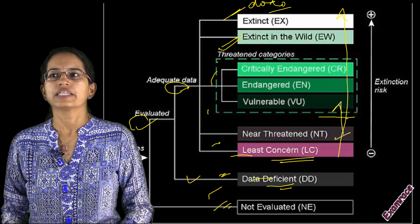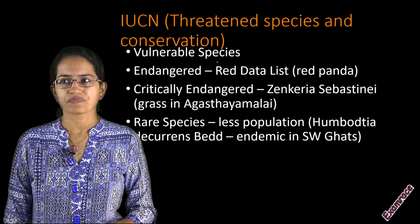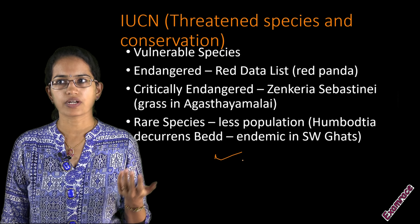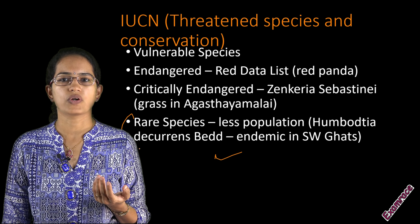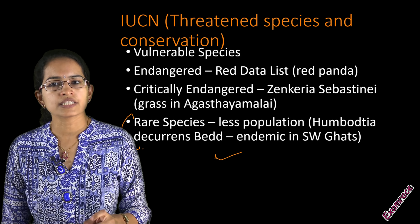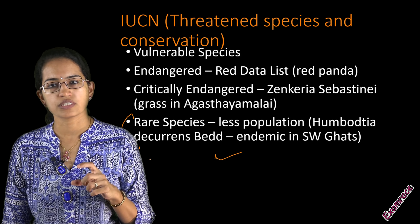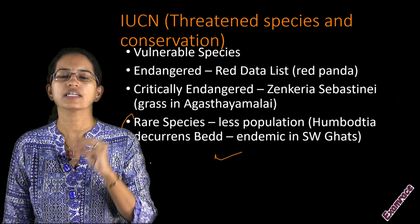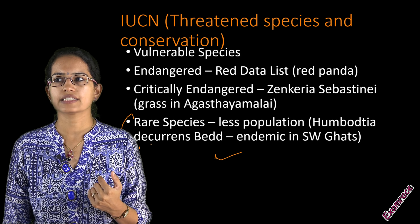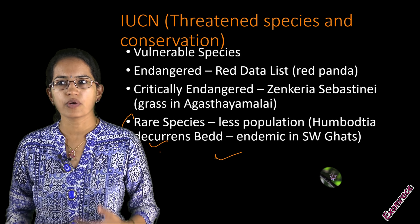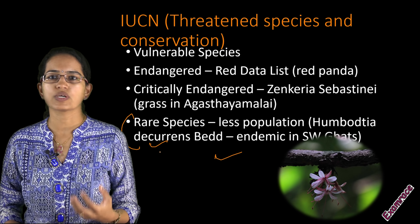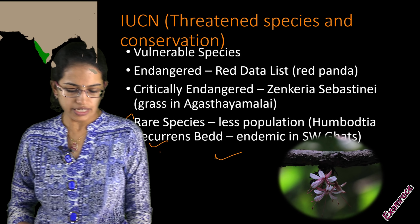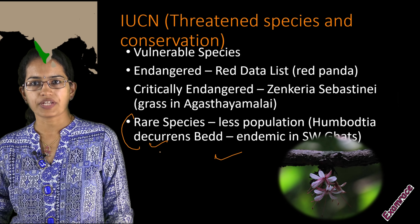Rare species are also important in the IUCN classification. Rare species are those present only in specific areas with very small populations. For example, Humboldtia is one of the rare species found in the southwestern Ghats in India.